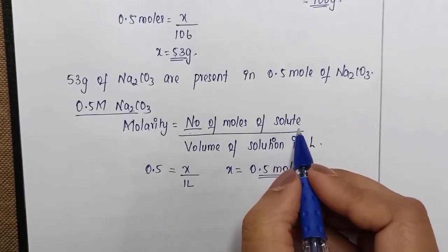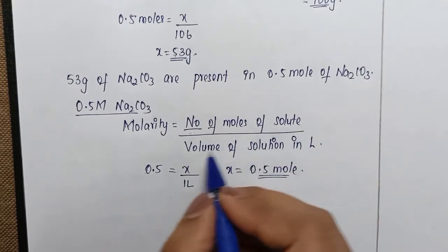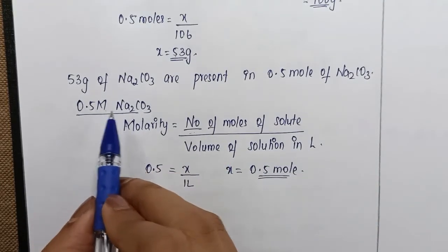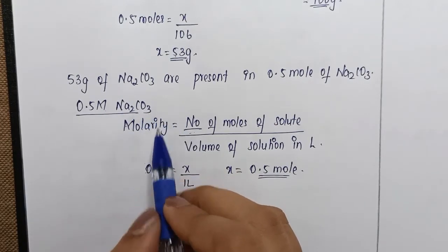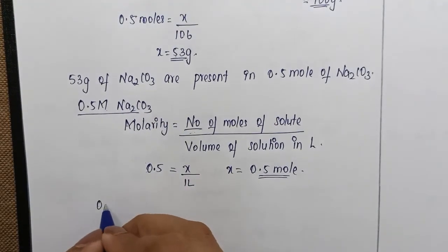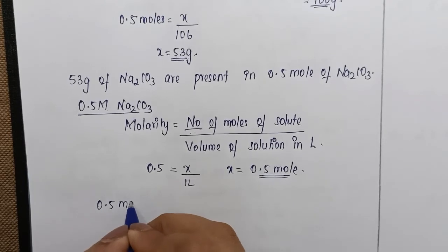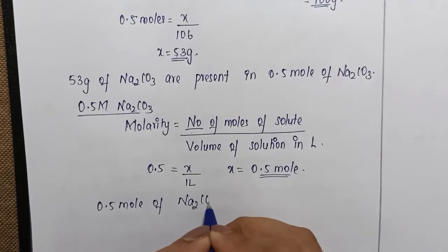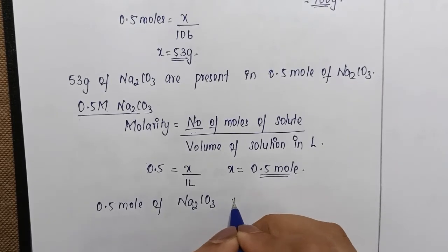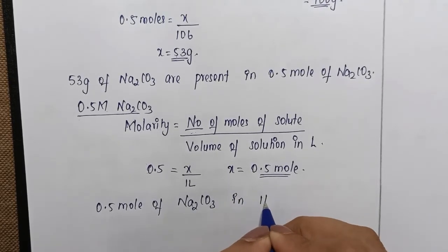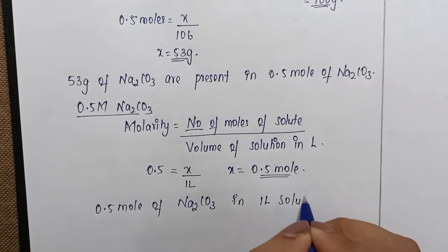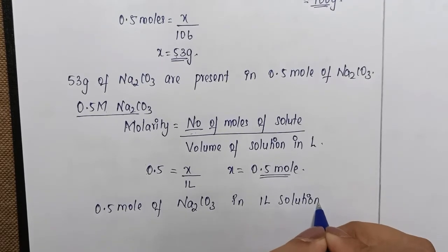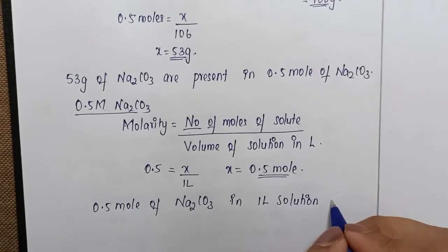That is the number of moles here. So for 0.5 molar solution of Na2CO3, we say 0.5 mole of Na2CO3 in one liter solution to produce...